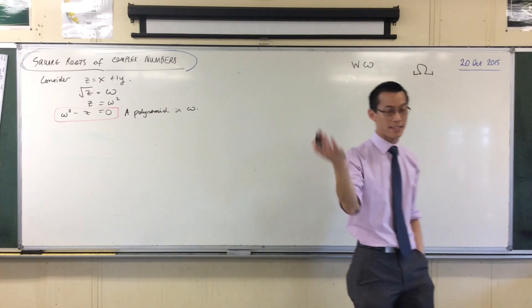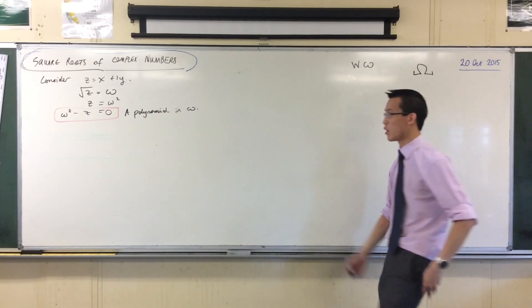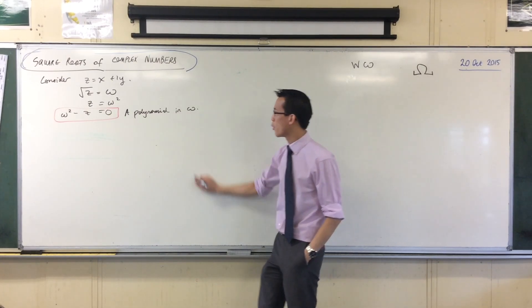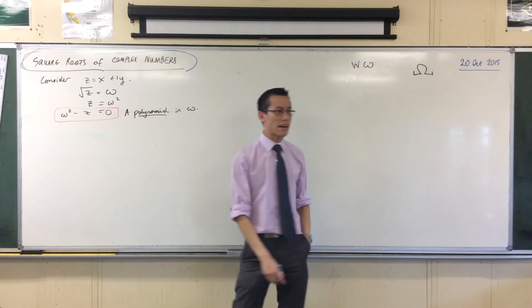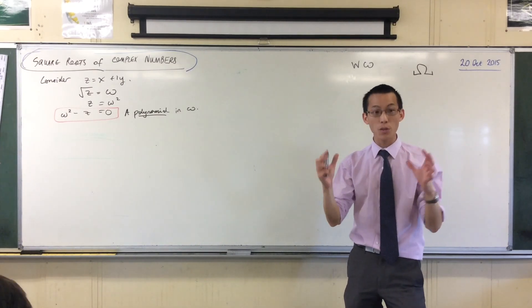We're used to writing, like, quadratics in x, or quadratics in y, or cubics in x, or cubics in y. This is a polynomial. It's a quadratic in omega. And the reason why I put this out is because I told you, I teased last lesson, this thing called the fundamental theorem of algebra.